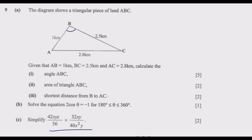Looking at sub-question 1, where we need to find angle ABC, the first question to ask is: is this a right-angle triangle? If the answer is no, you can't use the basic trigonometry ratios (SOH-CAH-TOA). So we need to think of either the sine rule or the cosine rule. The sine rule is used when you are given two angles and one corresponding side.